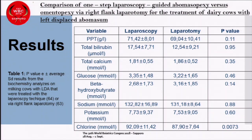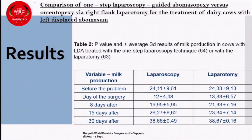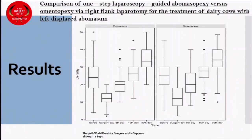In continuation of Table 1, you can see the biochemistry variables in both surgical groups — there are no differences between the groups. In Table 2, we have the results of milk production over time in both surgical groups, with a P-value equal to 0.42. This slide shows a graphical representation of milk production for the two groups at different time points. You can see they are almost equal.